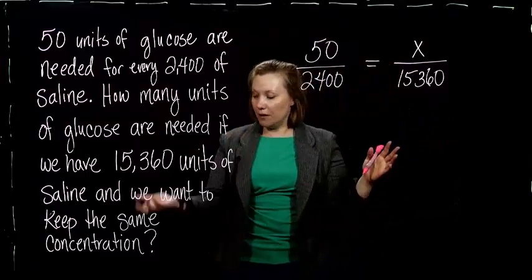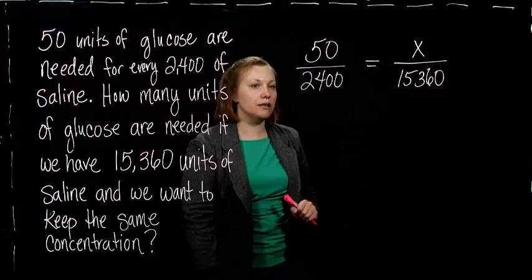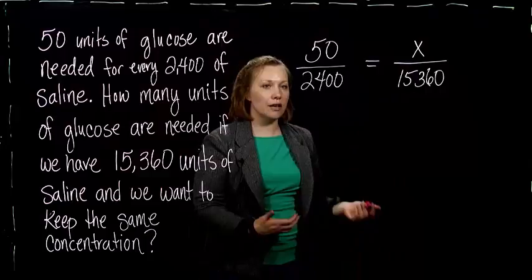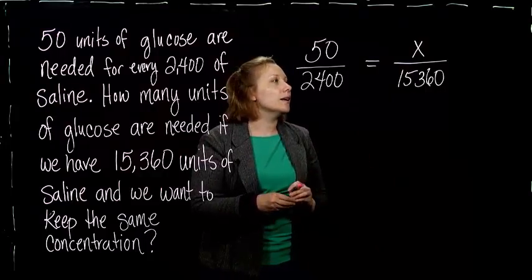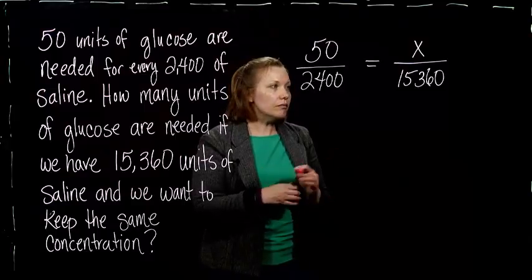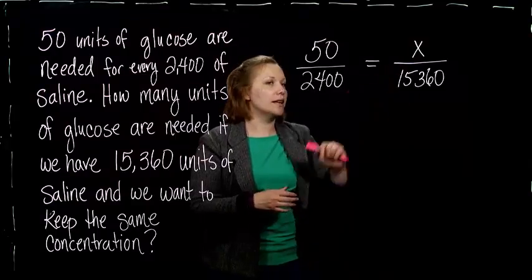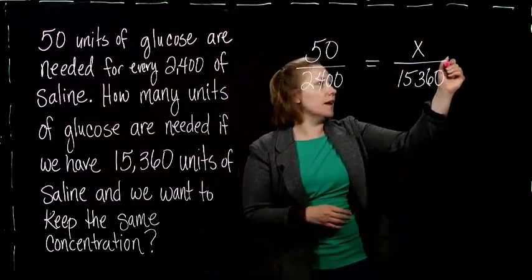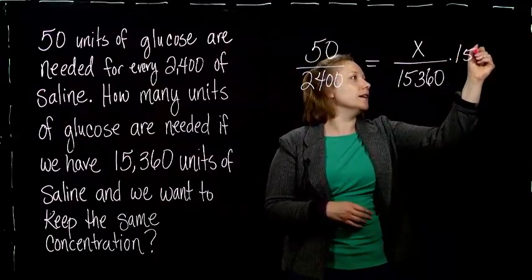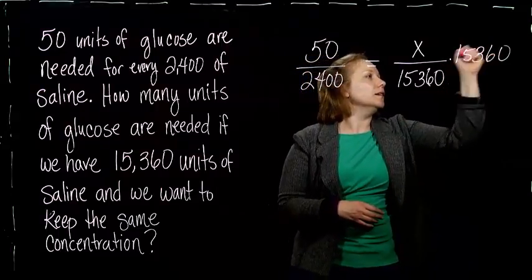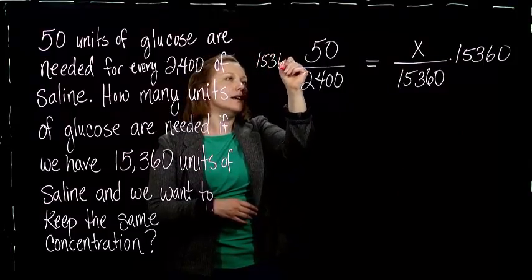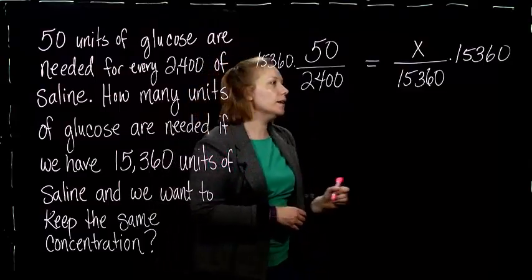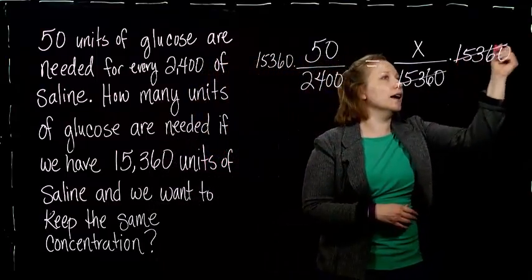So now what we have to do to figure this out is just solve this proportion using our knowledge of rational equations and the skills that we've developed. Okay, so that means we're just trying to get X by itself. So if we multiply on both sides by 15,360, I'll do it over here. And we've got to do the same thing to the other side. Okay, let me cancel out on this side.